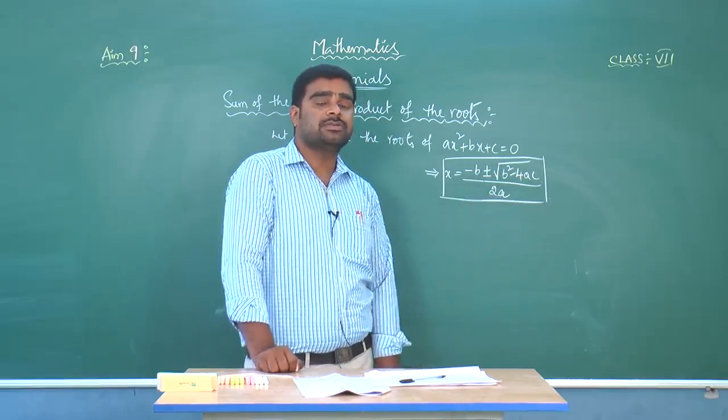So alpha plus beta equals minus 2B by 2A. The 2s cancel, giving us minus B by A. When the roots are alpha and beta, alpha plus beta equals minus B by A. This is the sum of the roots of the quadratic equation.